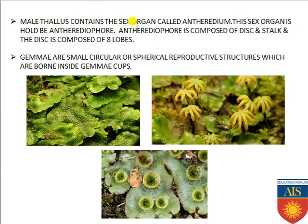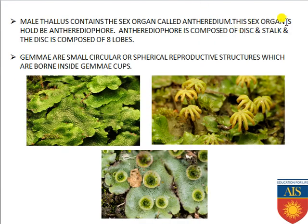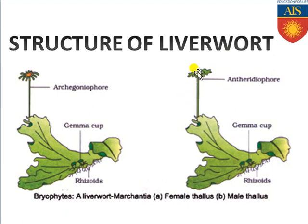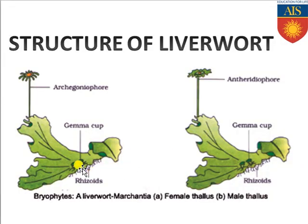The antheridiophore is composed of a disc and stock-like structure. The disc is composed of eight lobes, all connected with each other — not separate or dissociated. There is also another structure called gemma — small circular or spherical reproductive structures born inside the gemma cup.